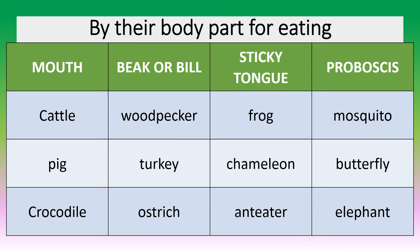Animals can also be grouped by their body parts for eating. They could be eating through their mouth or snout, or they could eat through their beak or bill. They could eat with their sticky tongue or with their proboscis.